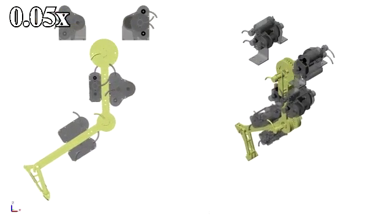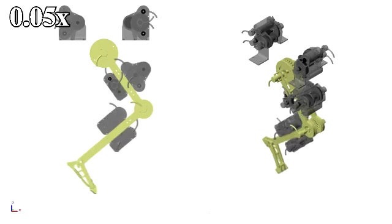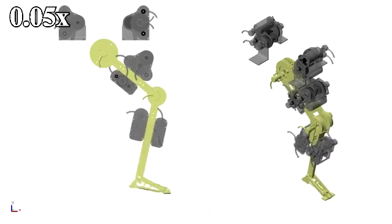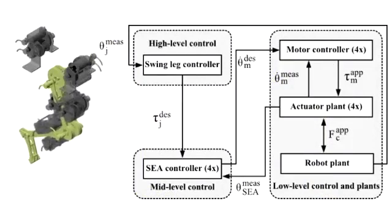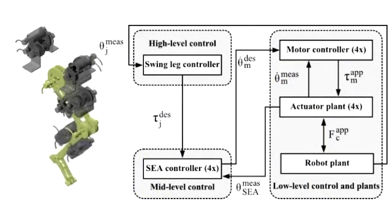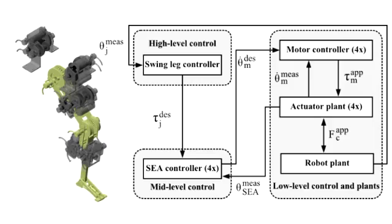A high-fidelity simulation of RNL2 is created as a tool to transfer the proposed swing-leg controller to robotic hardware. Its software and control architecture mimic the hardware setup, enabling us to adapt the swing-leg controller for real-time execution at 1 kHz.